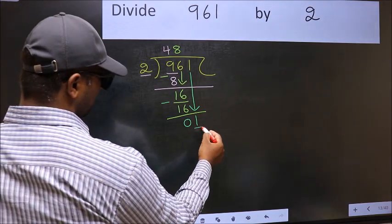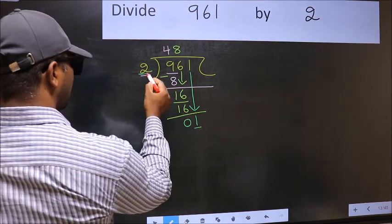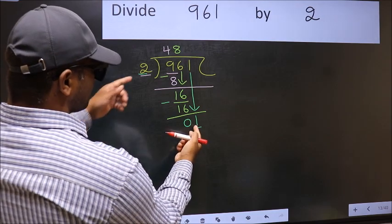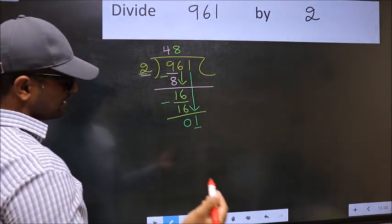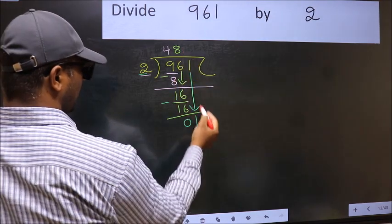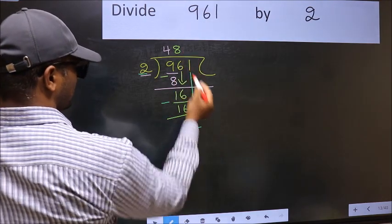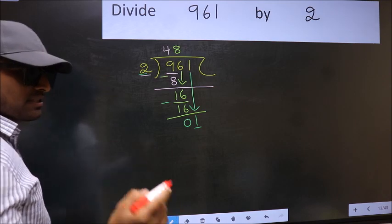Here we have 1, and here 2. 1 is smaller than 2. So what many do is, they directly put a dot and take 0. Which is wrong.